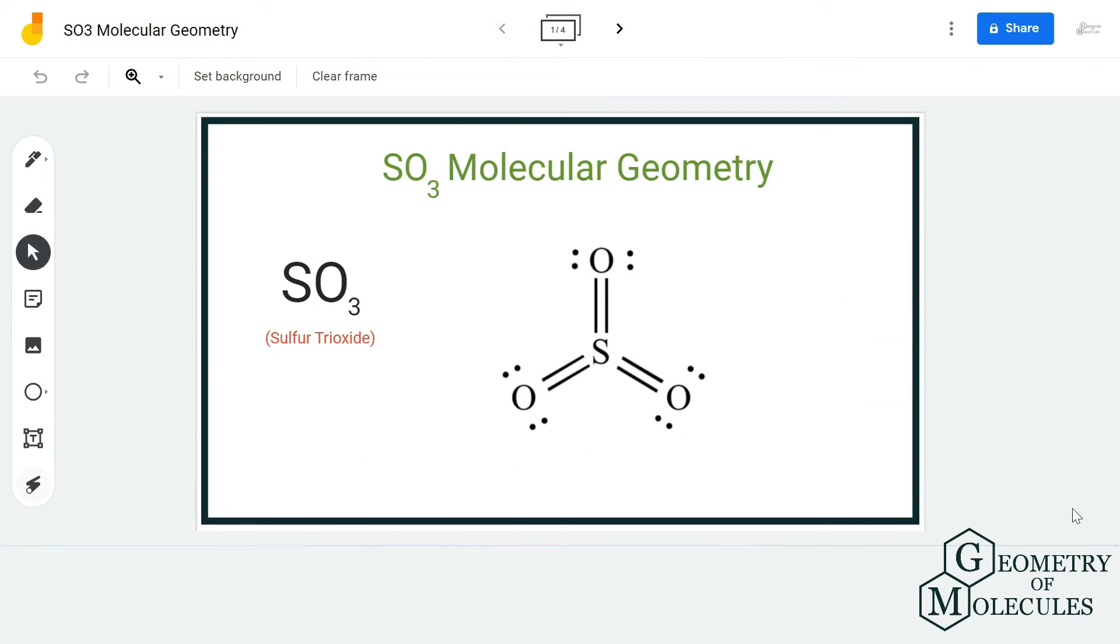Hi guys, welcome back to our channel. In today's video we are going to help you determine the molecular geometry of SO3 molecule. It's the chemical formula for sulfur trioxide, and to understand its molecular geometry we're going to look at its Lewis structure.